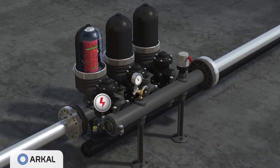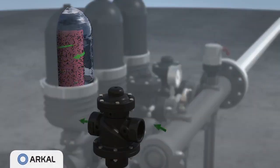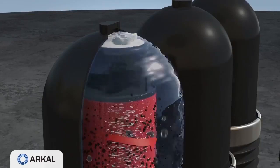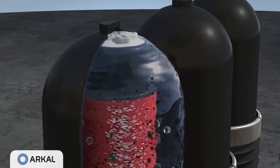An electric command switches the first valve, allowing filtered water to flow in reverse direction through the module. The pressure is released and the cylinder rises, releasing the compression on the discs.